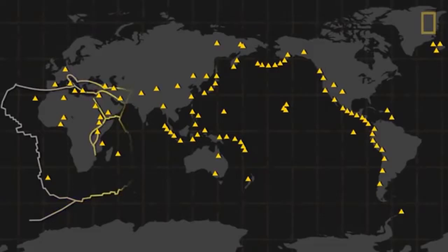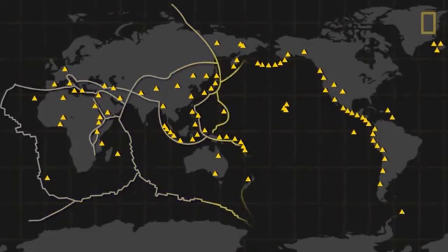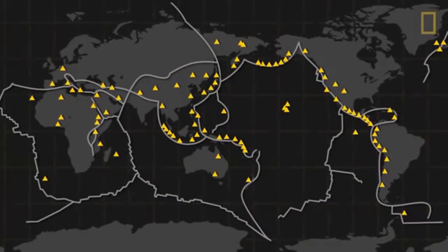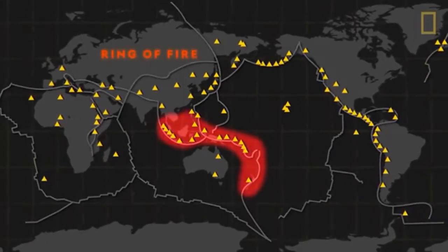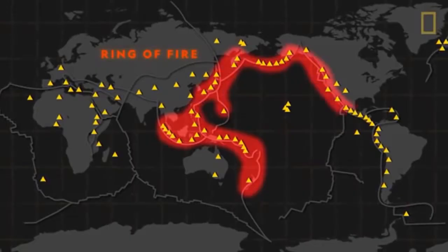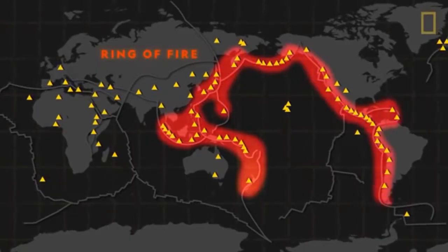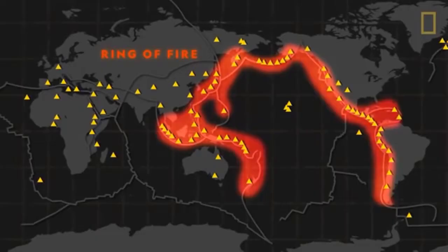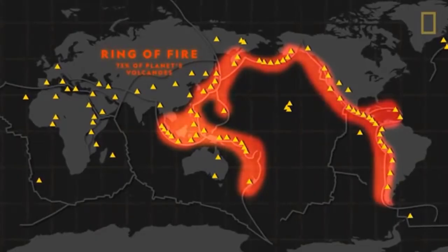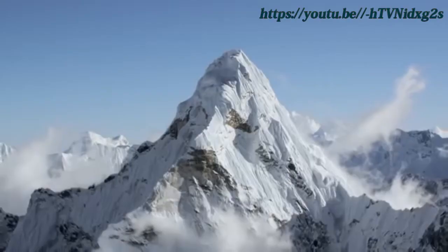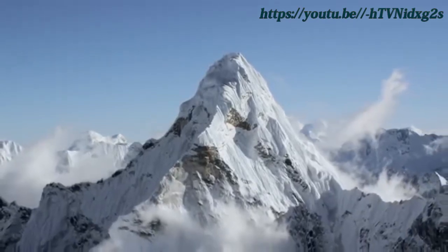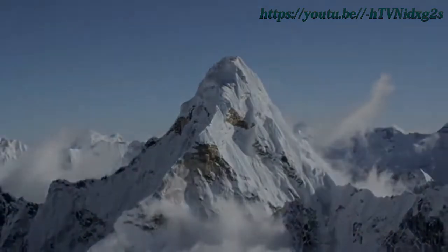The distribution of major mountain belts, earthquake epicenters, and active volcanoes are distributed in close proximity to the borders of the tectonic plates. Most of the active volcanoes are found in the so-called Ring of Fire, which is at the border of the Pacific tectonic plate or the tectonic plate boundaries.